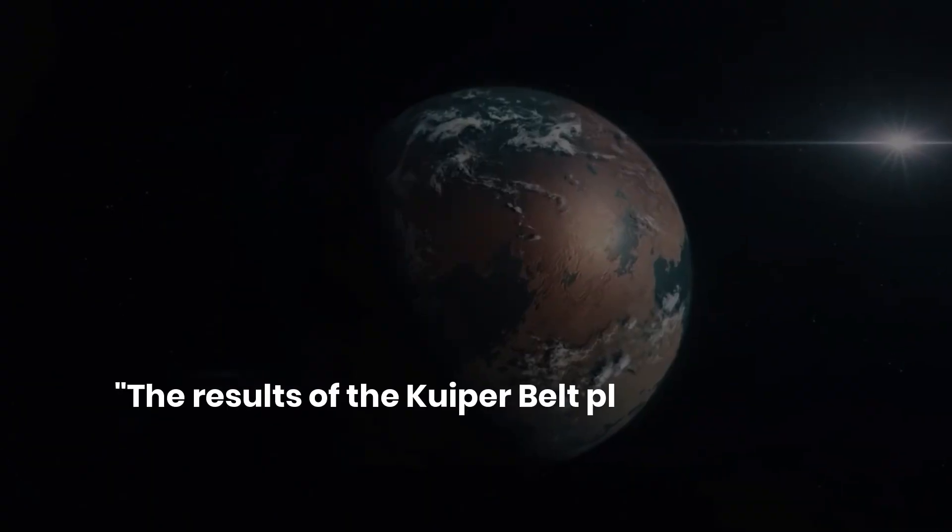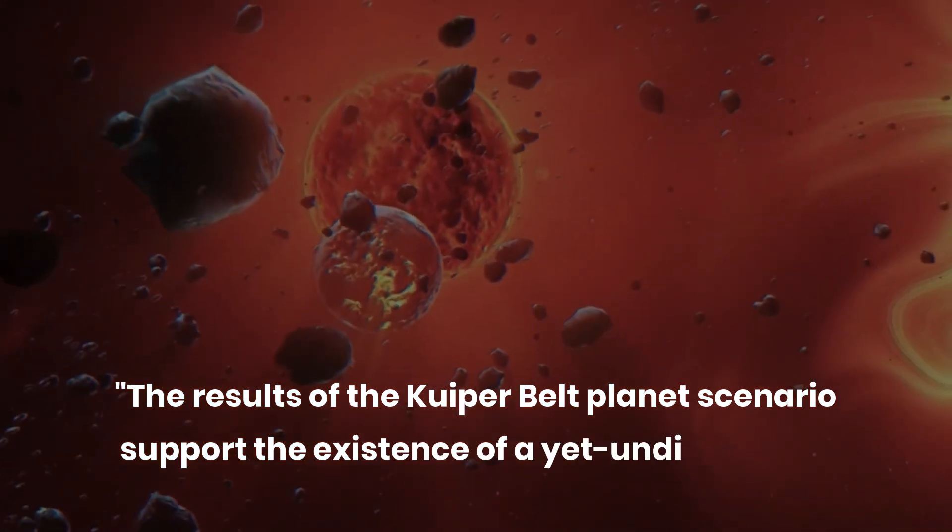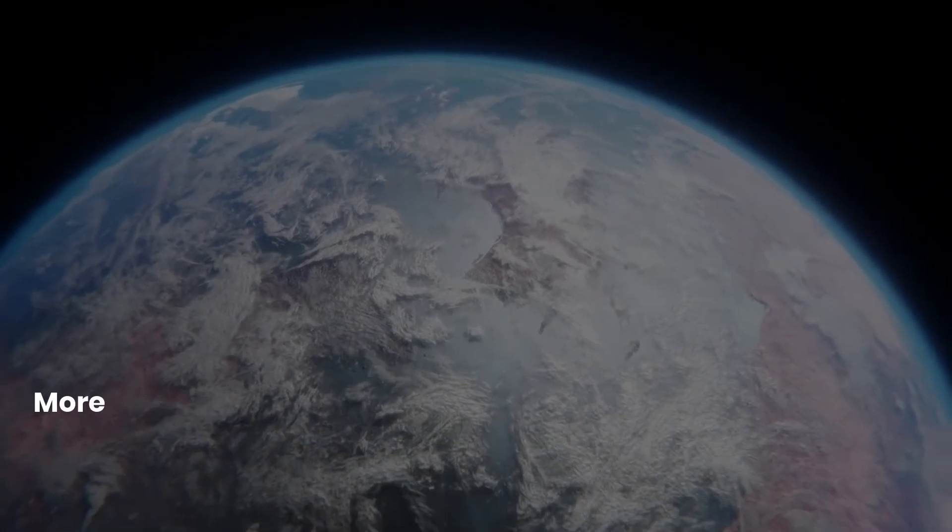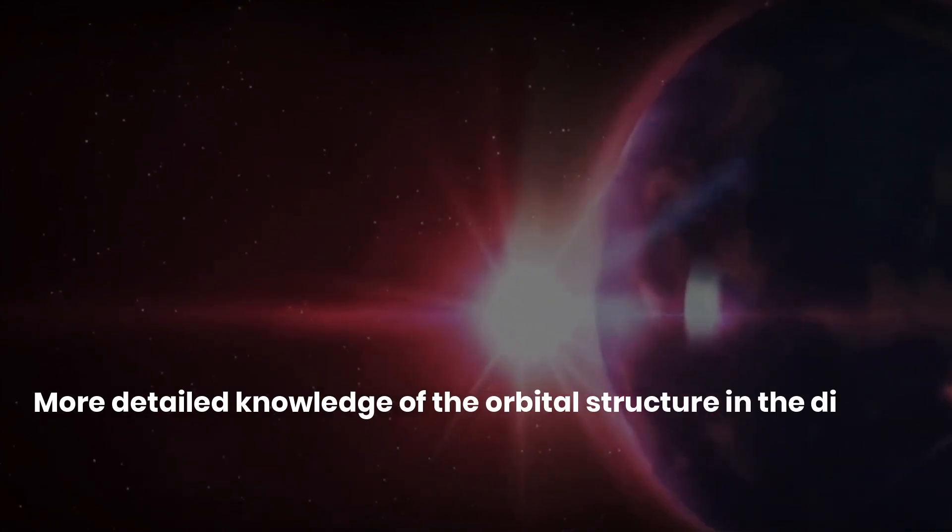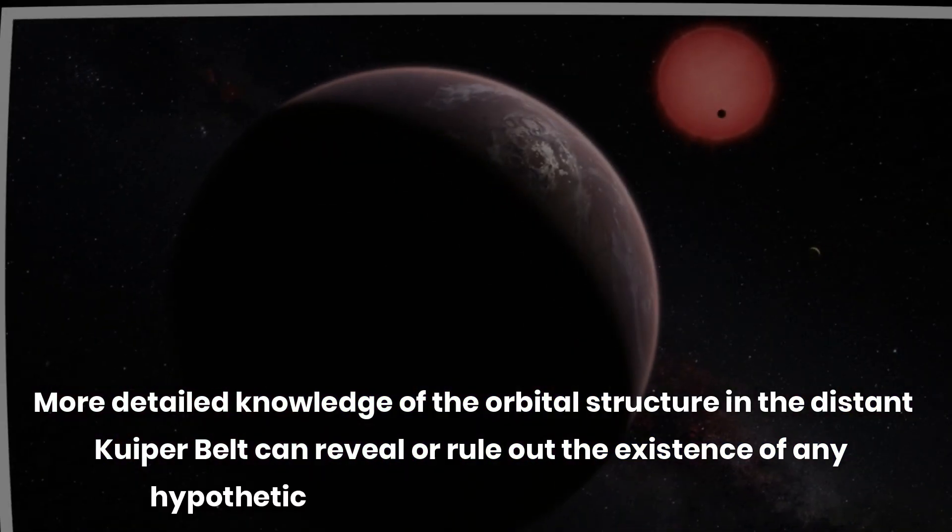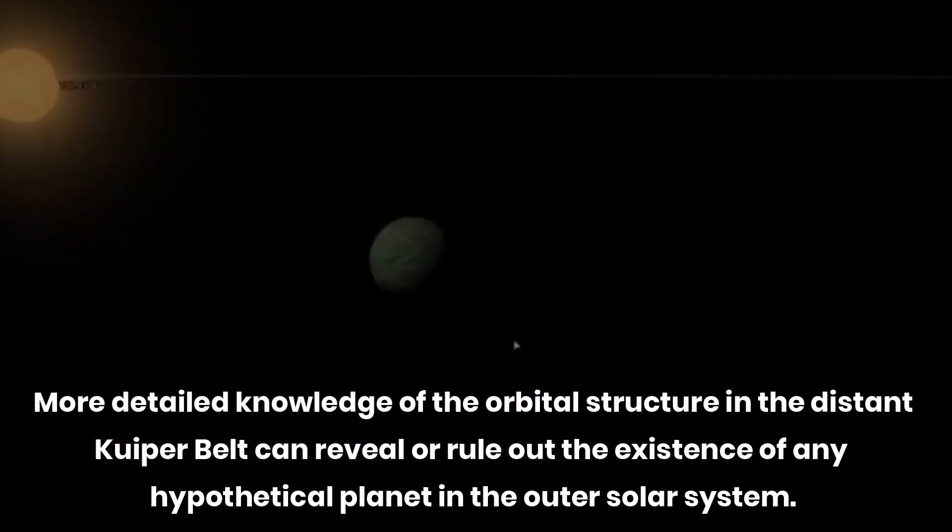The results of the Kuiper Belt planet scenario support the existence of a yet undiscovered planet in the far outer solar system. More detailed knowledge of the orbital structure in the distant Kuiper Belt can reveal or rule out the existence of any hypothetical planet in the outer solar system.